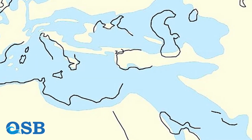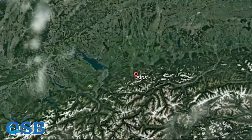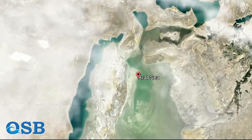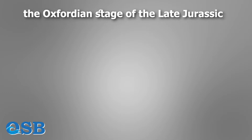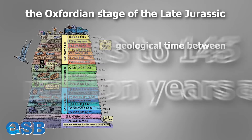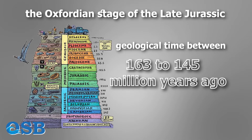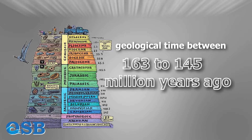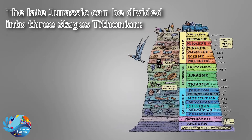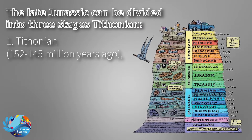The Paratethys Ocean was a large, shallow water basin stretching from the north of the Alps in Europe to the Aral Sea in Asia. This water body was formed during the Oxfordian stage of the Late Jurassic, the geological time between 163 to 145 million years ago.